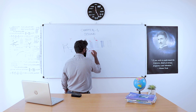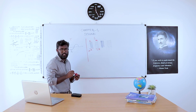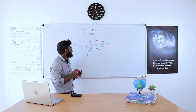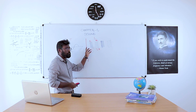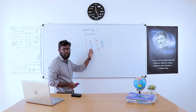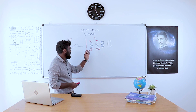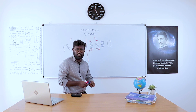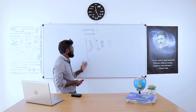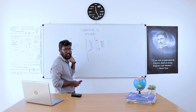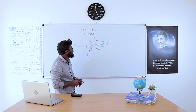For a longitudinal wave, this is a high pressure area called compression, and this is a low pressure area called rarefaction. So this is the difference between crest and trough, and compression and rarefaction.